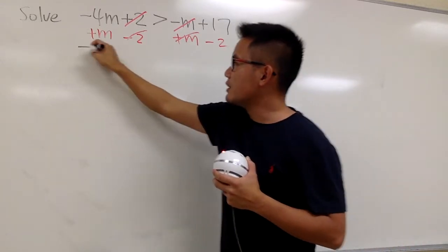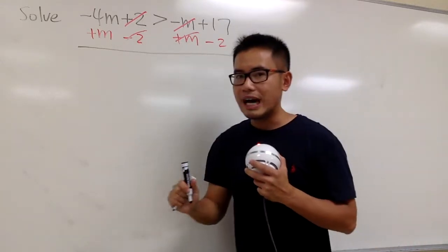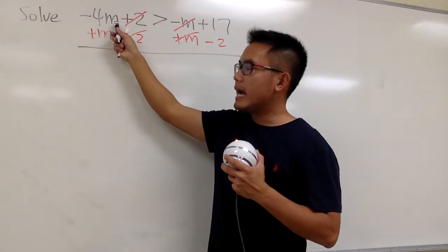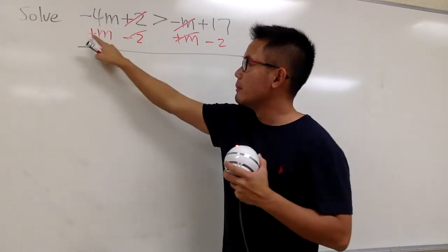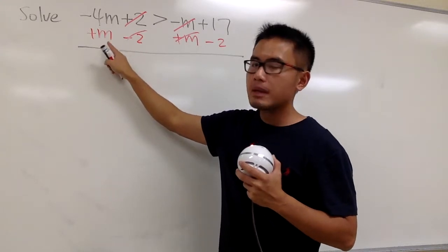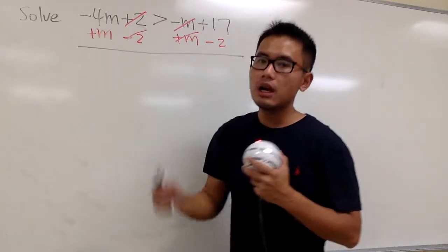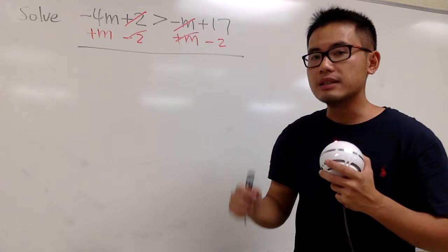Do this carefully, though. So here we have negative 4m plus, this is technically a 1, right, plus 1m. Combine these two numbers, negative 4 plus 1 is negative 3.